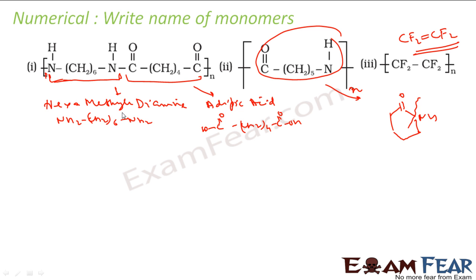So, monomer for the first compound, I know this is hexamethylene diamine and adipic acid. Monomer for this compound is caprolactam, and monomer for this compound, Teflon, is tetrafluoroethylene.